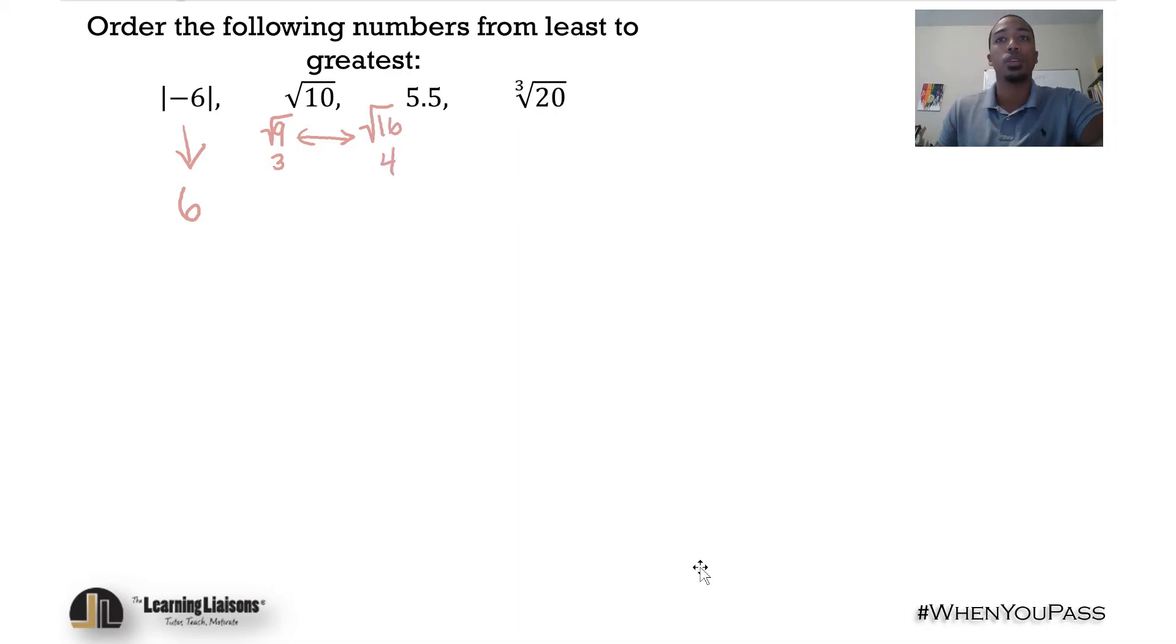So it's between 3 and 4, and we can safely bet that this is closer to 3 than it is to 4. We can safely bet that this is closer to 3 than it is 4, so just about 3. You could say it's between 3 and 4, just keep that in mind.